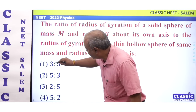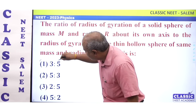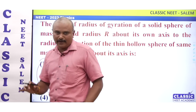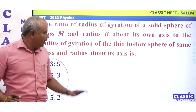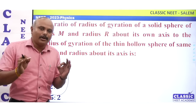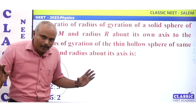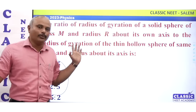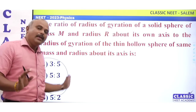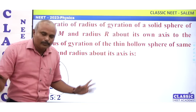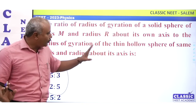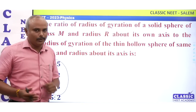Looking at the four choices, we don't have root 3 to root 5 as an option. That's why we should give grace marks in this question. Regardless of which choice you select, we should give grace marks in this case.